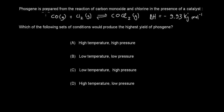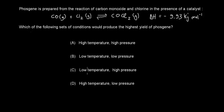Next question: phosgene is prepared from the reaction of carbon monoxide and chlorine in the presence of a catalyst: CO + Cl2 → phosgene (COCl2). Which set of conditions will produce the highest yield of phosgene? A, high temperature, high pressure. B, low temperature, low pressure. C, low temperature, high pressure. D, high temperature, low pressure.